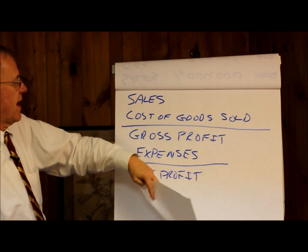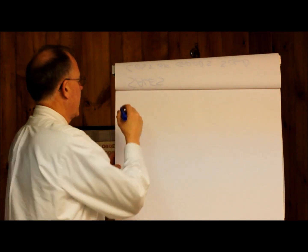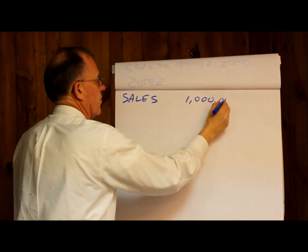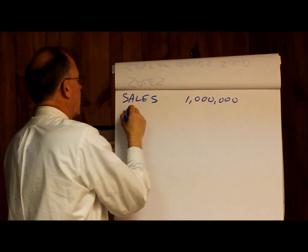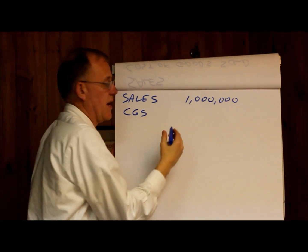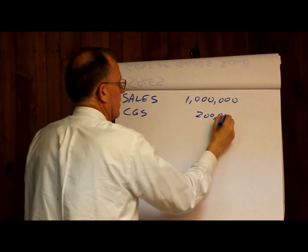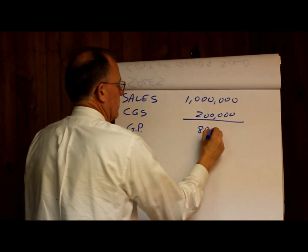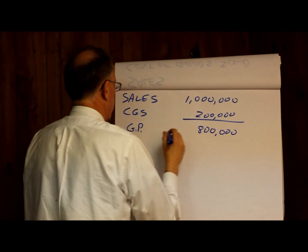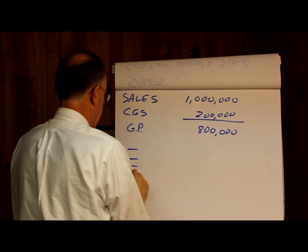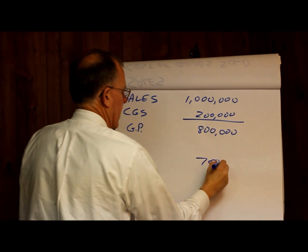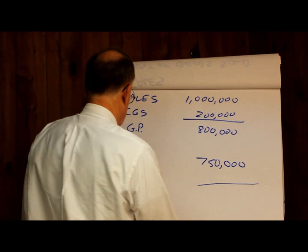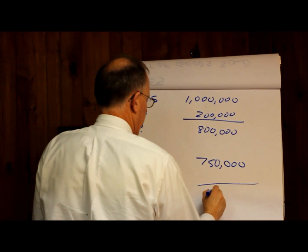Let's use an example and show you how to use this and why it might be useful. Let's say you have sales of $1 million in your business, and then you have cost of goods sold — CGS — of $200,000. That's going to leave us a gross profit of $800,000. And let's say after we add up all our expenses — utilities, wages, and everything — those are $750,000, which gives us a net profit of $50,000.